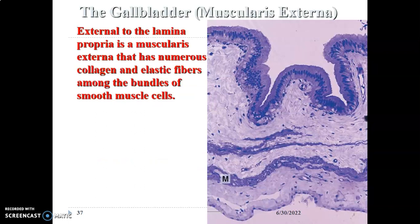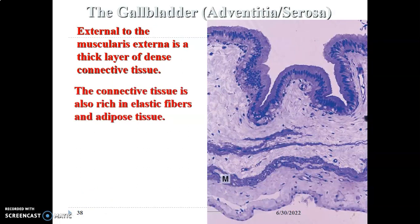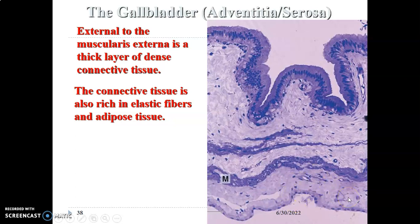Then there is the muscularis externa, or fibromuscular layer, mainly made up of smooth muscle cells and connective tissue — collagen and elastic fiber. Before you get to the serosa, which is mainly connective tissue made up of elastic fiber and adipose. So to summarize: mucosa with simple columnar epithelium and microvilli, then lamina propria, then the fibromuscular layer, then the perimuscular layer, and finally the serosa containing connective tissue and adipose.